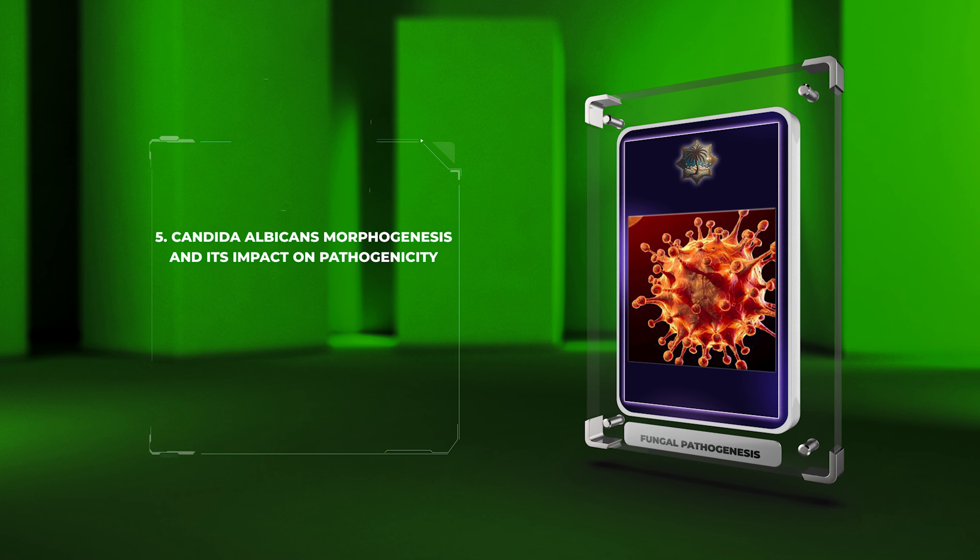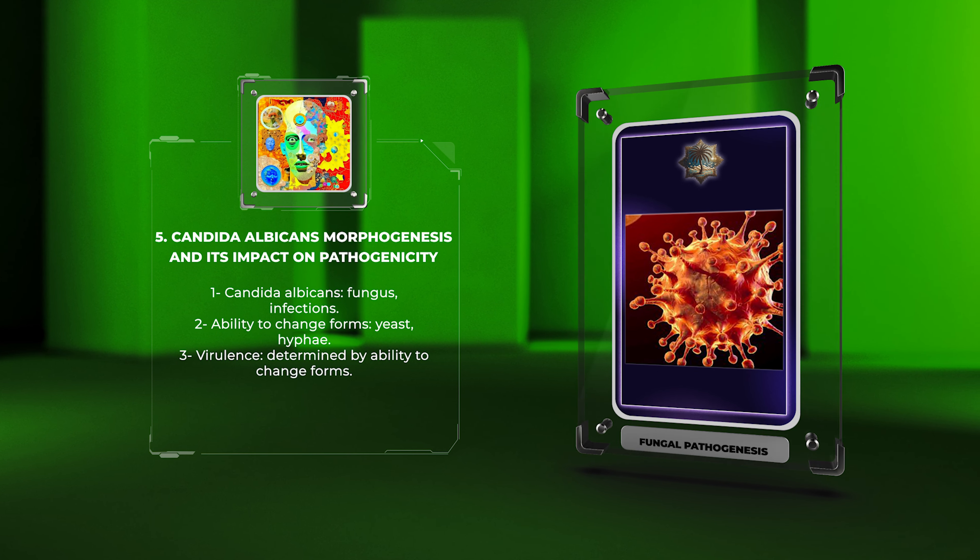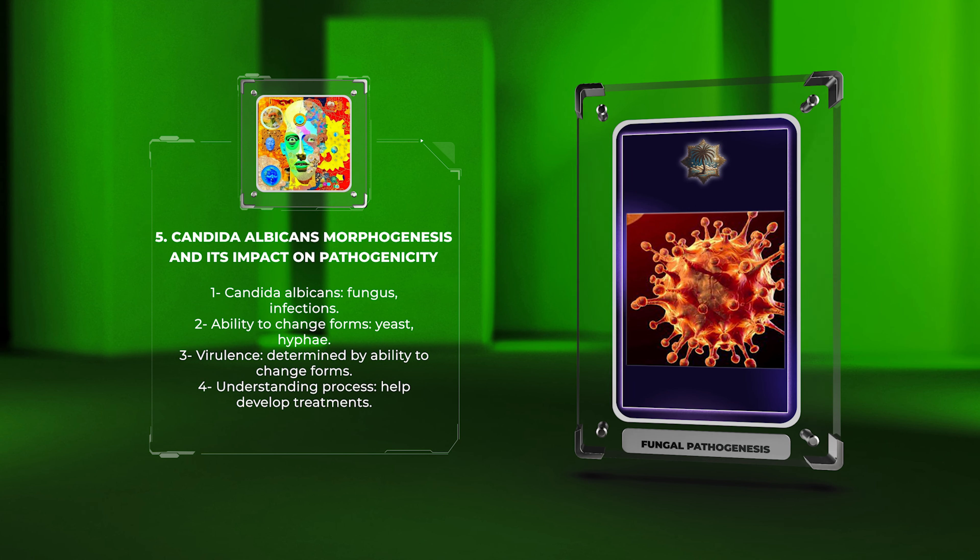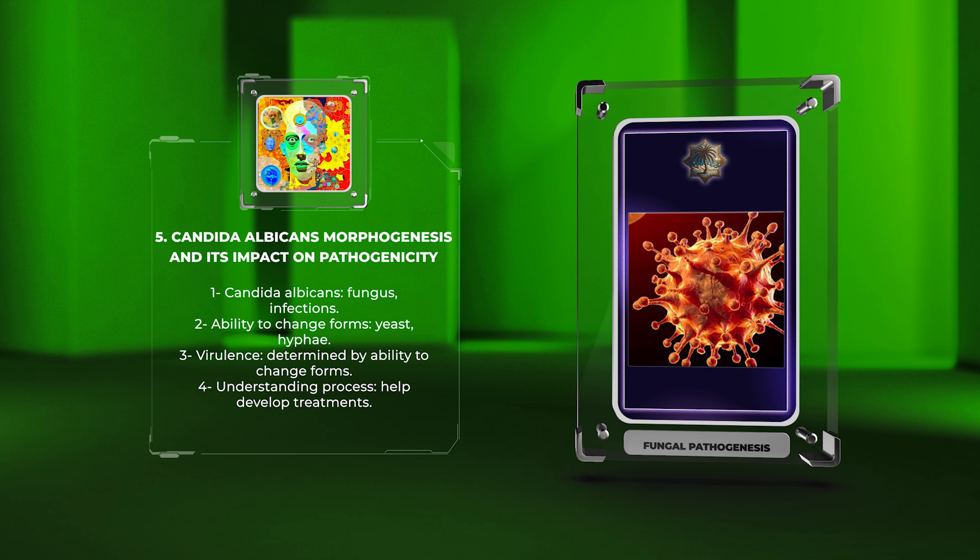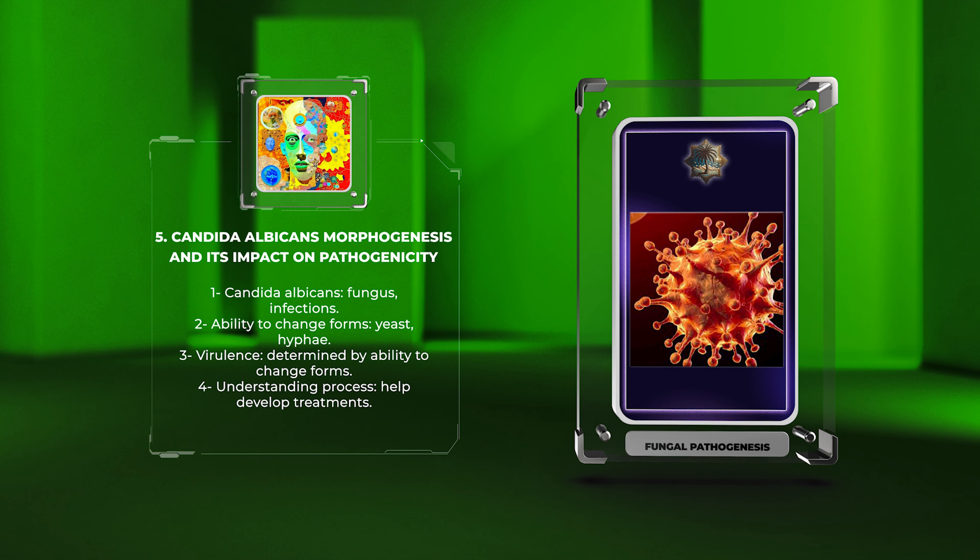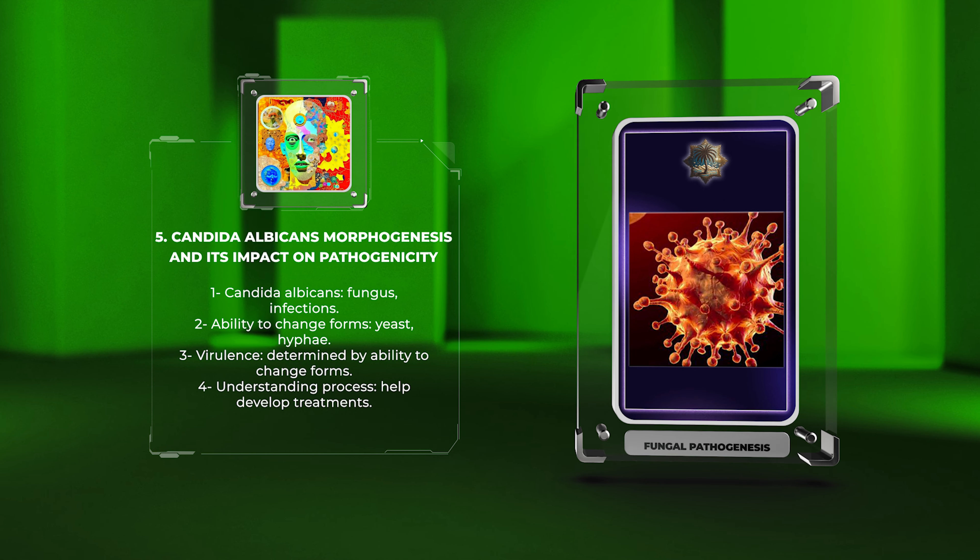Candida albicans, a fungus normally found on surfaces, can become pathogenic and cause infections. Its ability to change forms, such as yeast or hyphae, determines its virulence. Understanding this process may help develop treatments.